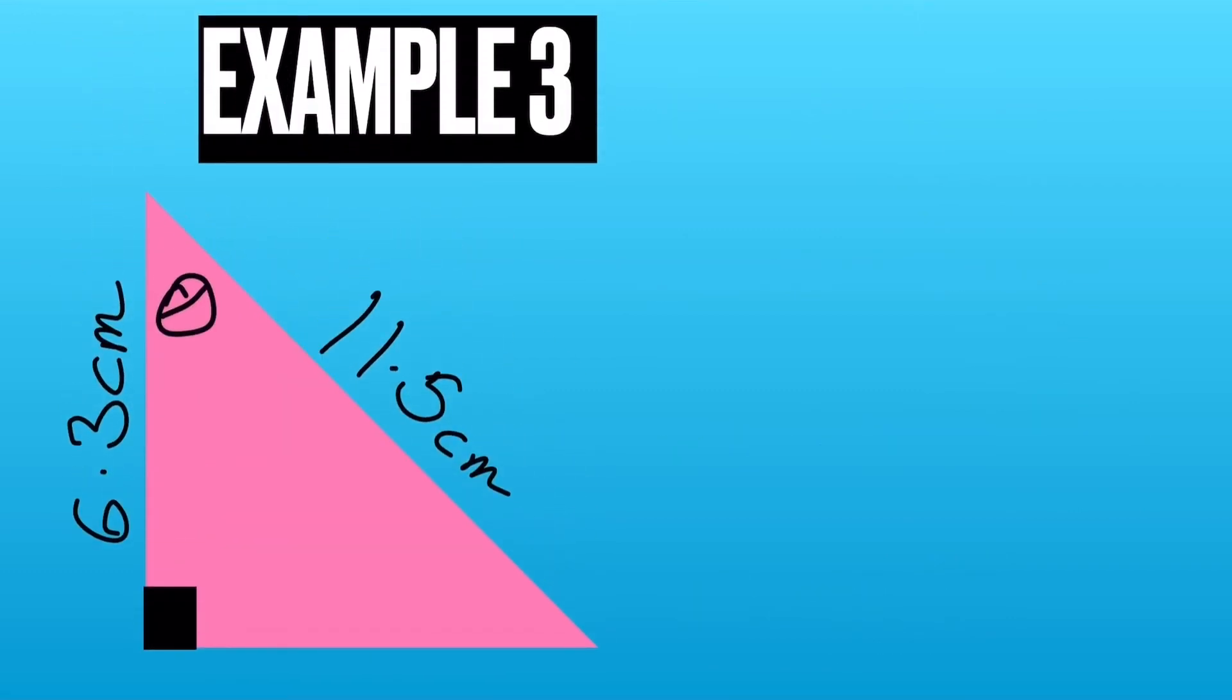Example 3. So this time opposite our angle, there's nothing there. Opposite the right angle is the hypotenuse, and the adjacent side is left. So we've got adjacent and hypotenuse, so it's cos. So cos theta equals adjacent over hypotenuse.